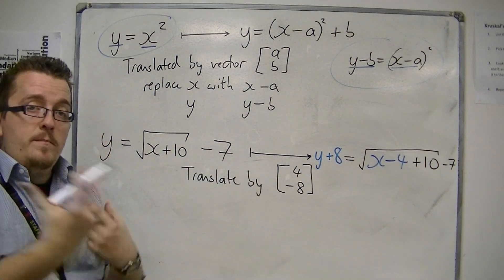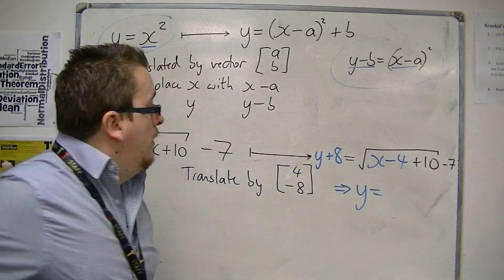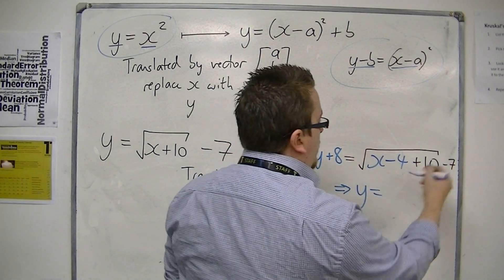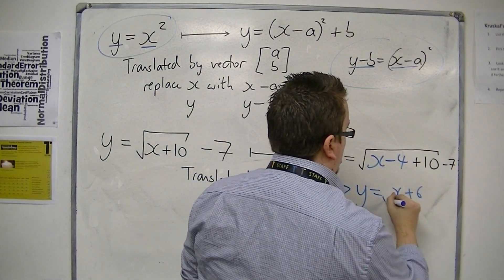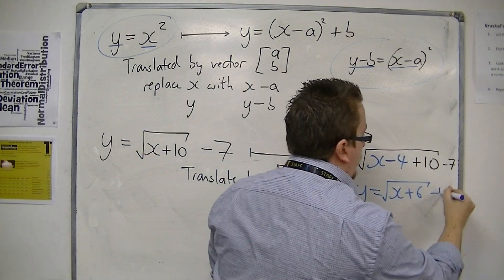This can then be simplified, so that you just have y equals x minus 4 plus 10 inside, so x plus 6, and then take 8 from both sides to get minus 15.